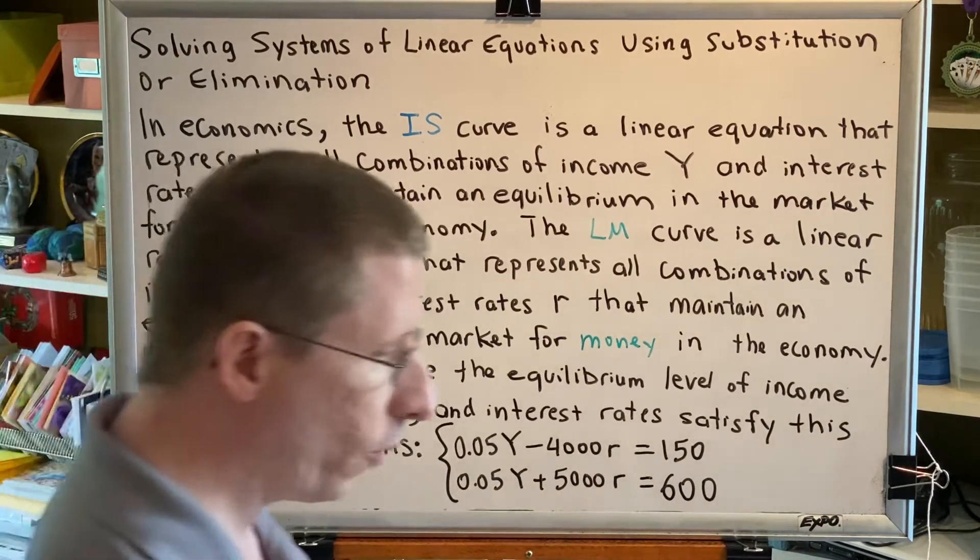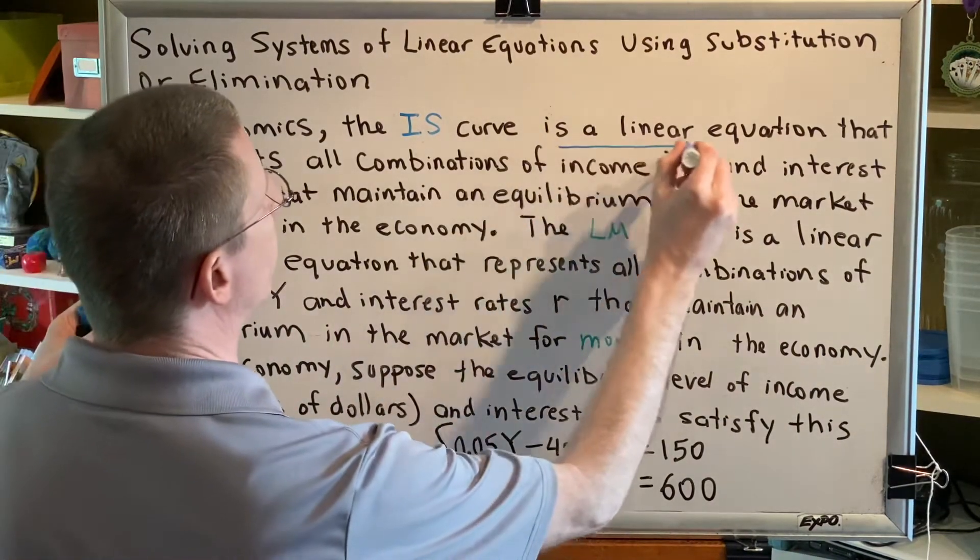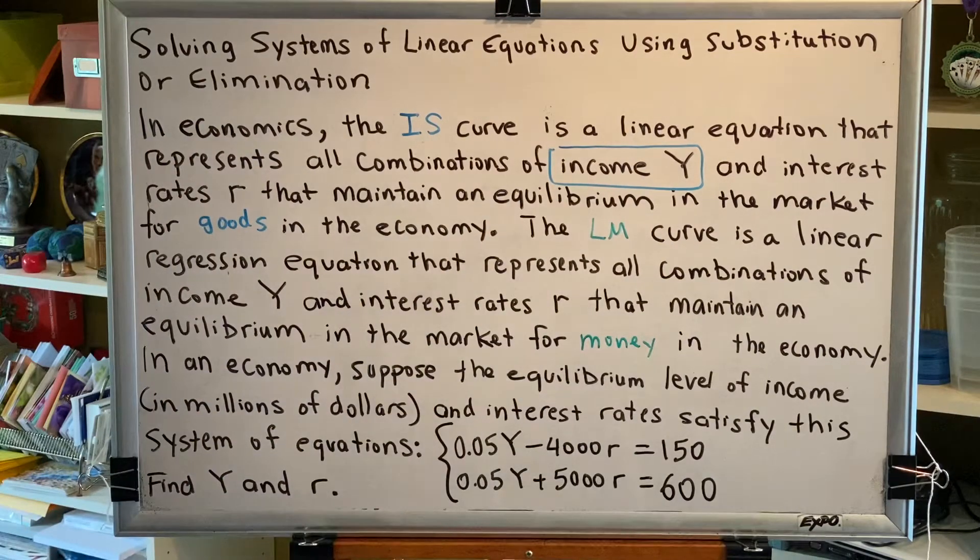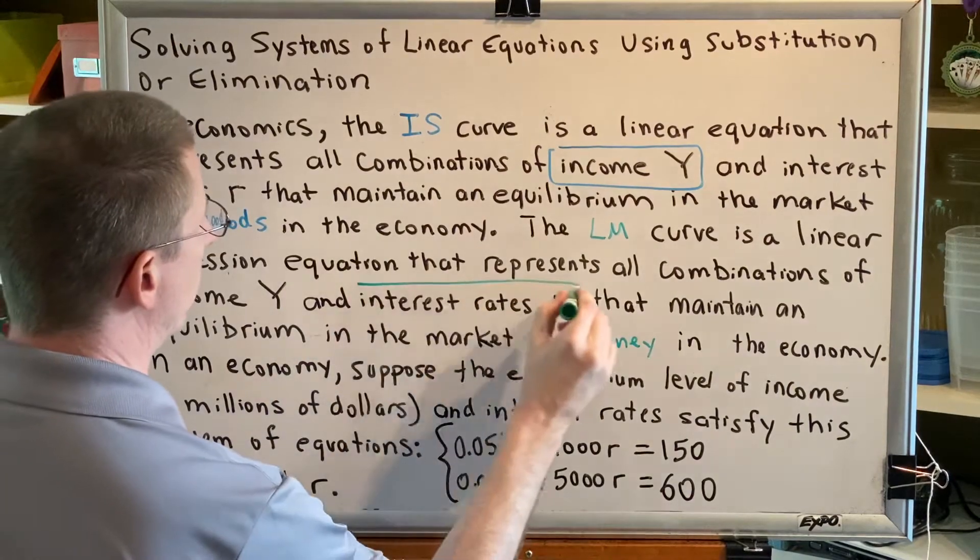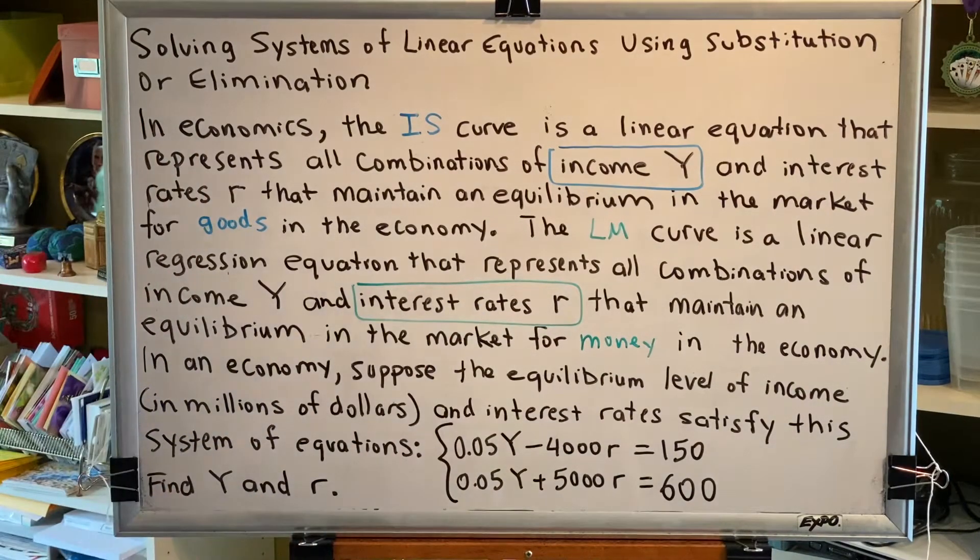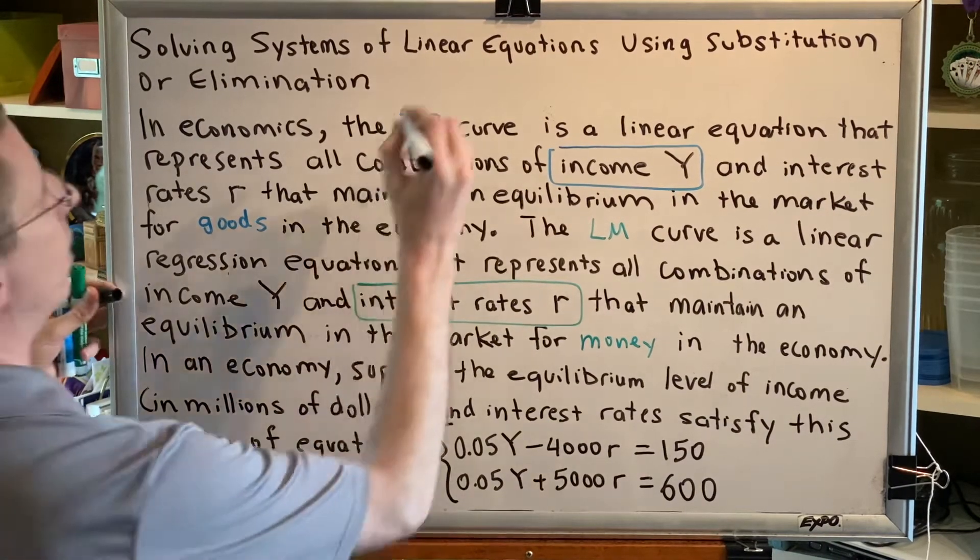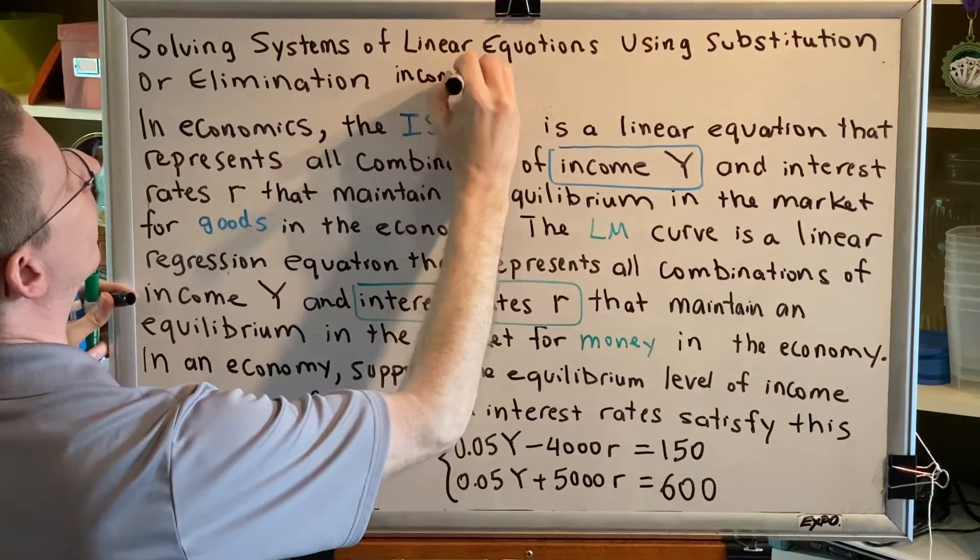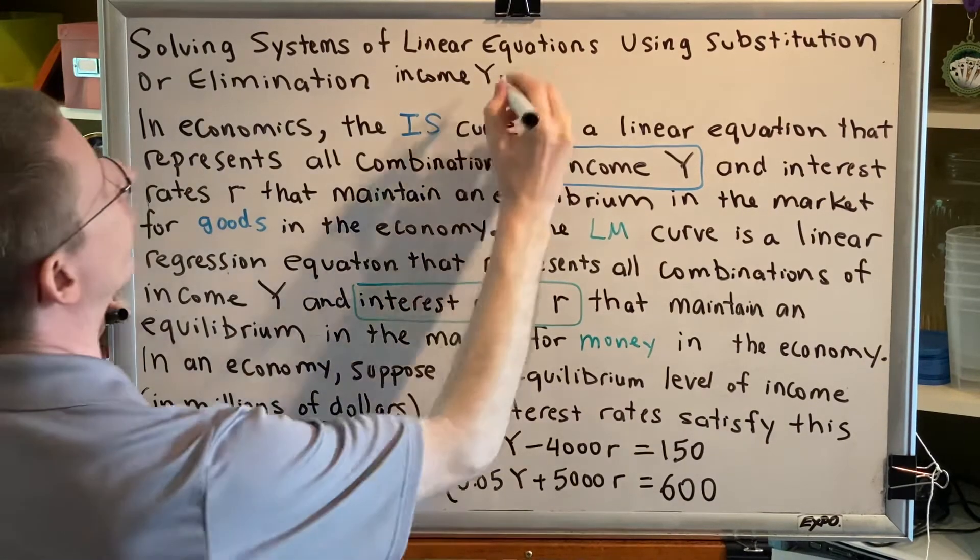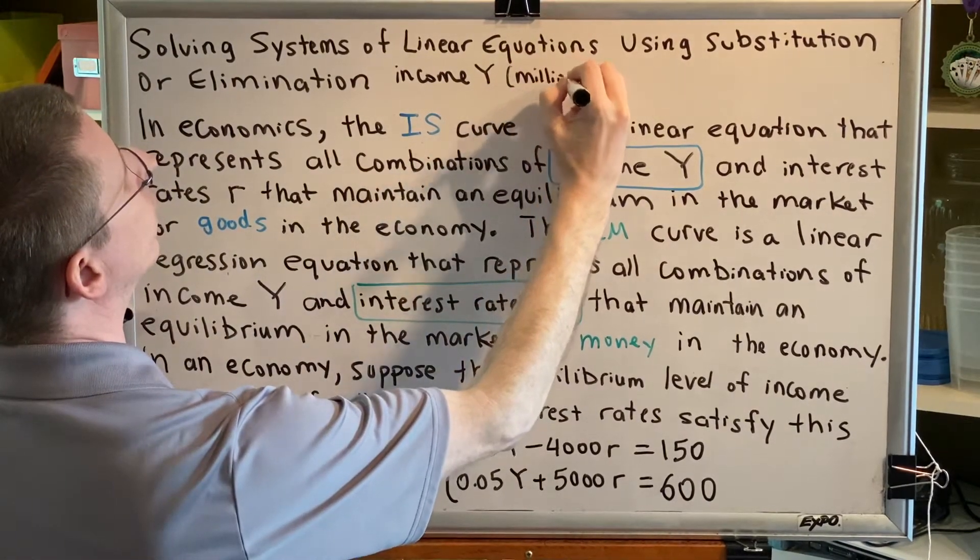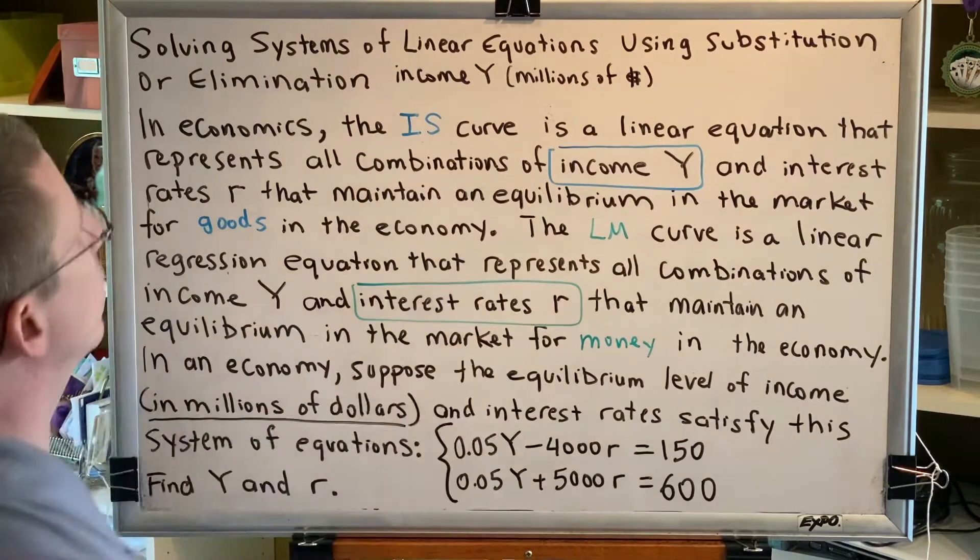Okay, so the first thing that we want to pay attention to is what these mean. Capital Y is the income and lowercase r is the interest rate. This will help us to interpret our answer when we are done solving this problem. So let's just make a few notes. Income is capital Y and we note that it is measured in millions of dollars. And interest rate is R.